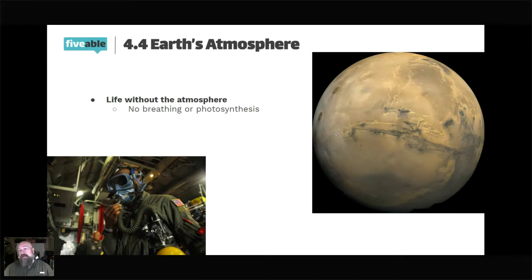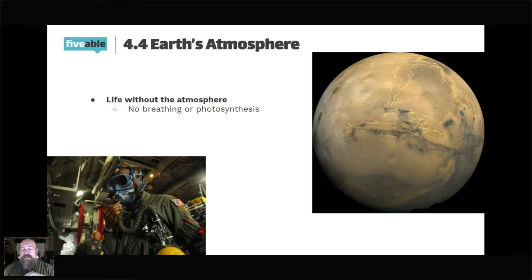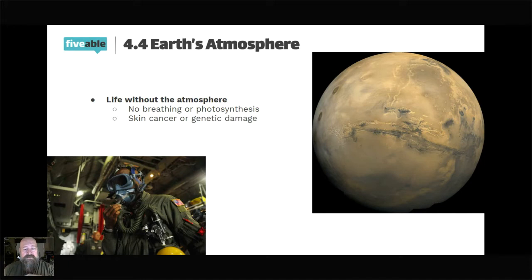The ozone layer is part of the atmosphere, so that takes care of our radiation protection. No more breathing — no photosynthesis because all the carbon dioxide is gone, and we can't breathe because all the oxygen is gone. Carla mentioned more radiation, so skin cancer would be more prevalent if we're able to survive; if not, you're going to see a lot of genetic damage because of that solar radiation.